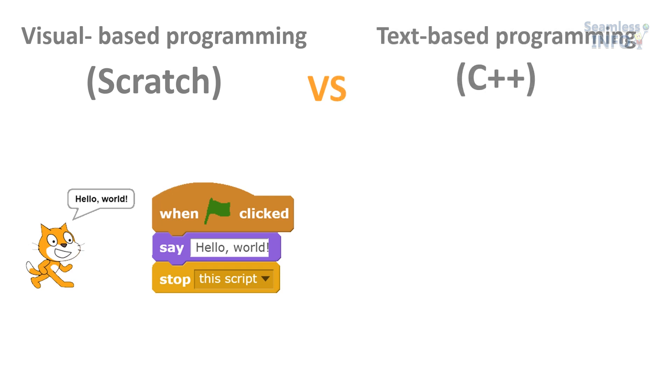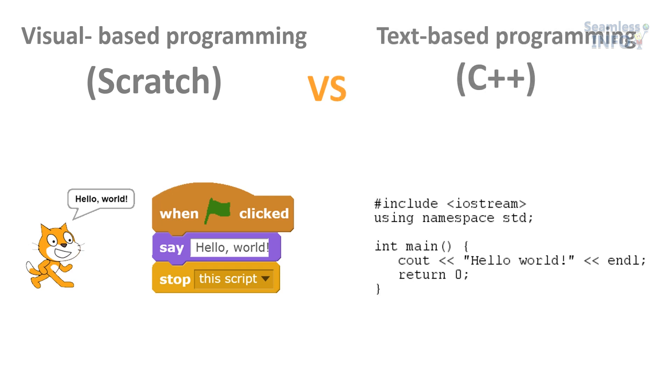But there are also a great number of visual based programming languages as well. Visual based programming languages are the ones that allow you to manipulate visual elements — that is, drag and drop — to make a program. Whereas in a text based programming language, you have to write lines and lines of code to make a program. Now I'll show the general difference between them by showing you what a hello world program looks like in Scratch and C++. Scratch is a visual based programming language and C++ is a text based programming language.